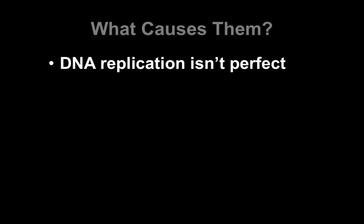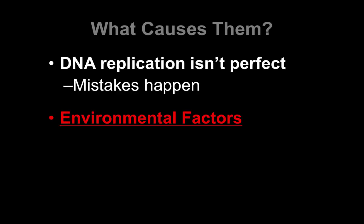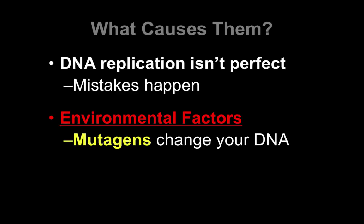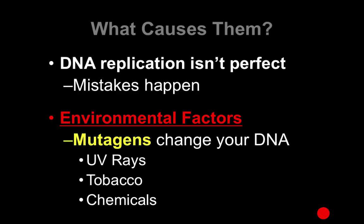So what causes mutations? First, DNA replication is not perfect. Every time your DNA is replicated, there's a chance that mistakes happen. Your body has many ways to prevent and fix these, but every now and then mistakes do happen and you get mutations. Additionally, environmental factors can change your DNA, and when they do, we call them mutagens. Things like UV rays, tobacco, various types of chemicals, industrial chemicals, and pesticides can actually mutate your DNA.